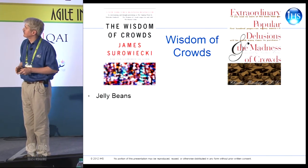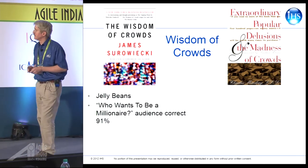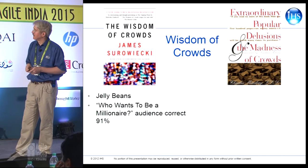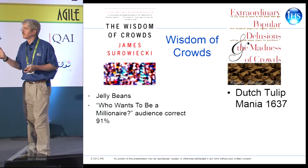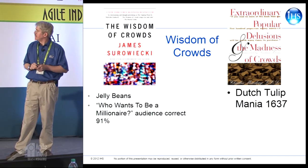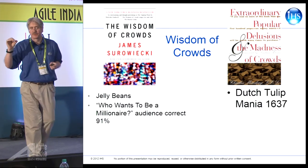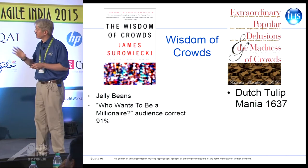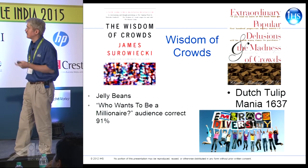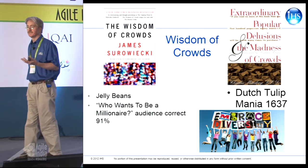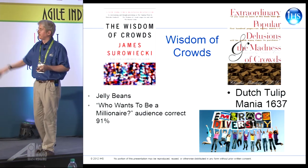Examples of the wisdom of crowds include jelly bean estimation and Who Wants to Be a Millionaire — asking the audience gets 91% correct answers. Examples of the madness of crowds include stock markets going mad and the Dutch tulip mania in 1637, where an individual tulip bulb was worth multiple millions of dollars. The key part is diversity: if a crowd has diversity, it will tend towards being really smart; if not, it can go off into groupthink and be totally crazy.